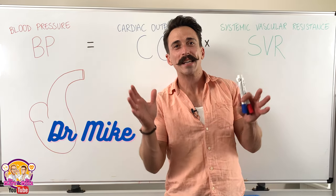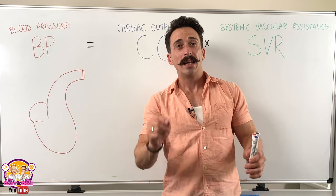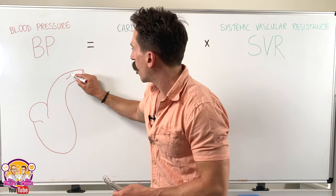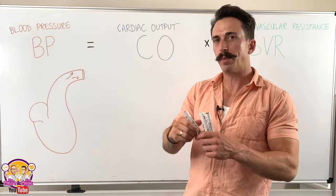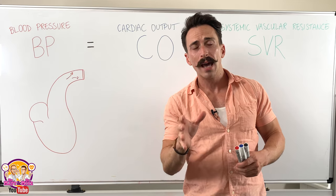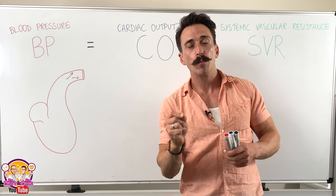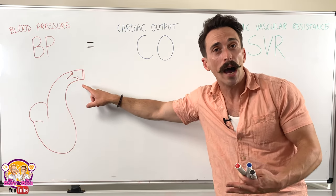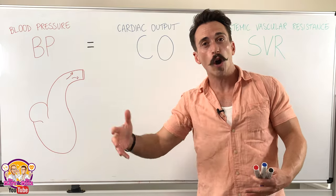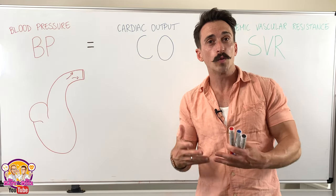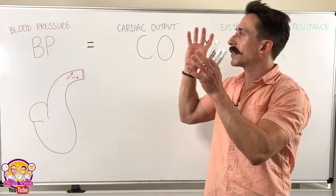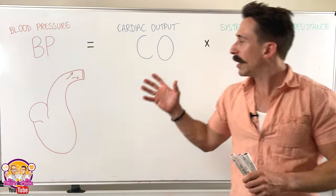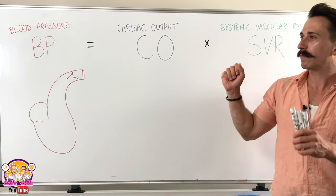Hi everyone, Dr. Mike here. In this video we're going to take a look at blood pressure. Blood pressure is the force that the blood places on the walls of our vessels, and it's important for you to understand because one in four people globally have chronically elevated blood pressure. That means the force being placed on the walls of their vessels is chronically high, and that can lead to damage over time resulting in vascular disease, which is one of the biggest killers worldwide. So we need to understand blood pressure in order to treat it, and blood pressure can be easily outlined by this very simple equation.